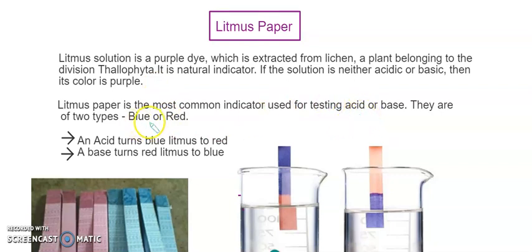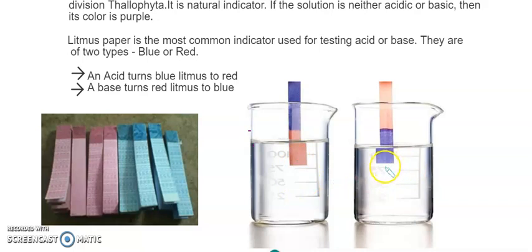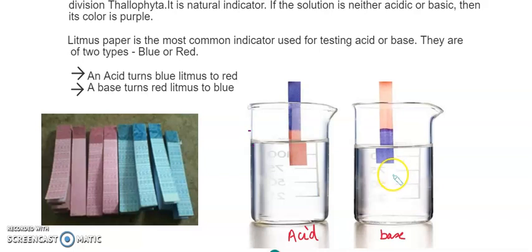Litmus paper comes in two types: blue and red. Acid turns blue litmus to red — when blue litmus is dipped into an acid, it changes to red, indicating it is an acid. When red litmus is added to a solution and it changes to blue, that means it is a base. So to test an acid use blue litmus; to test a base use red litmus — it will change to blue.